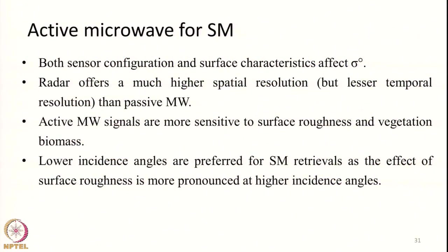Moving on to active microwave for soil moisture: similarly, addition of water to the soil increases its backscattering coefficient, so wet soils will appear brighter in active microwave images. However, active microwave remote sensing is highly influenced by surface roughness parameters and vegetation parameters compared to passive microwave. These have to be perfectly modeled, or ground measurements must be taken, in order to retrieve soil moisture from active remote sensing. Both sensor configuration — frequency, look angle, and polarization — and surface characteristics influence soil moisture estimation.